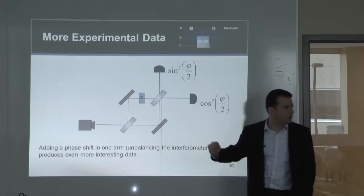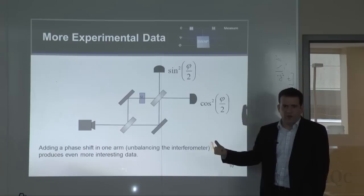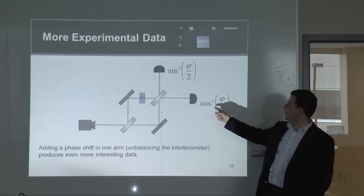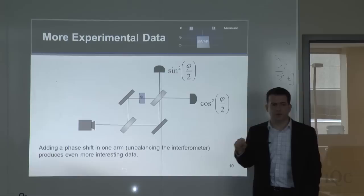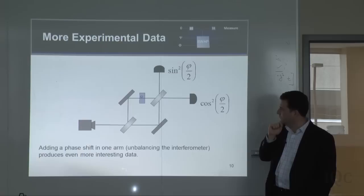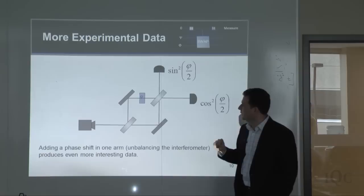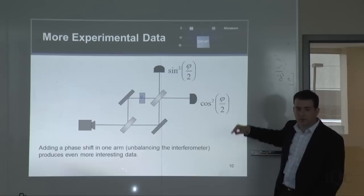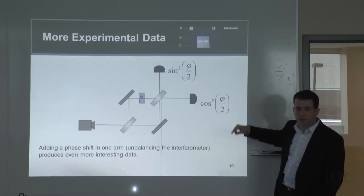You can do more experiments by putting a piece of glass of thickness proportional to φ in one of the two arms. With φ=0 (nothing there), you get 100% detection at one detector — cos²(0). As you put a thicker and thicker piece of glass in, you start seeing detections at the other detector proportional to sin²(φ/2). Since sin² + cos² = 1, these are probabilities. By effectively changing the path length of the two arms, detection oscillates in a sinusoidal way. Classical theory does not naturally explain this.